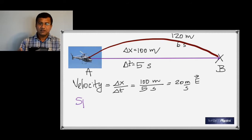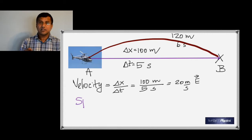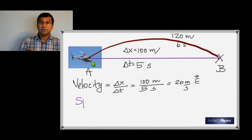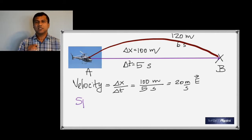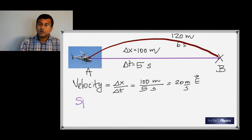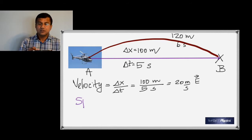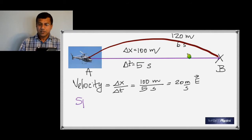To find the velocity, even though it flew along a curve, you take the straight-line distance between the starting point and the finishing point, because velocity is displacement over time and displacement is always measured in a straight line from start to finish. Therefore the velocity is also 20 meters per second to the east.